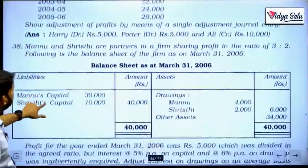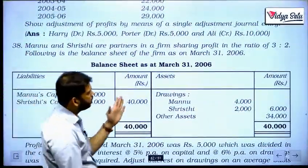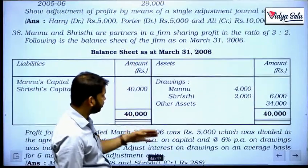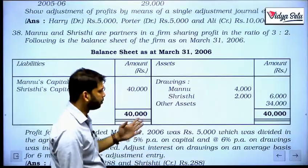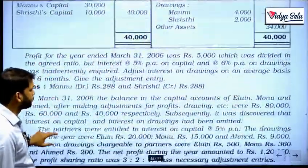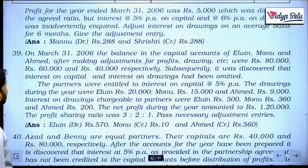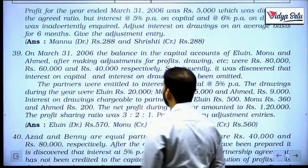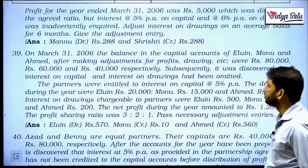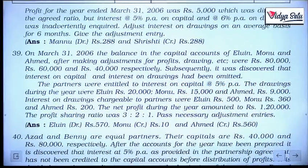Let us do question number 39. The same question 38 could have been done in which way - this 5,000 whatever is there, we could have first taken back and then made the P&L appropriation as we used to do earlier. On March 31, 2006, the balance in the capital accounts of Elwin, Monu and Ahmed after making adjustments for profit, drawings, etc. was 80,000, 60,000 and 40,000 respectively.